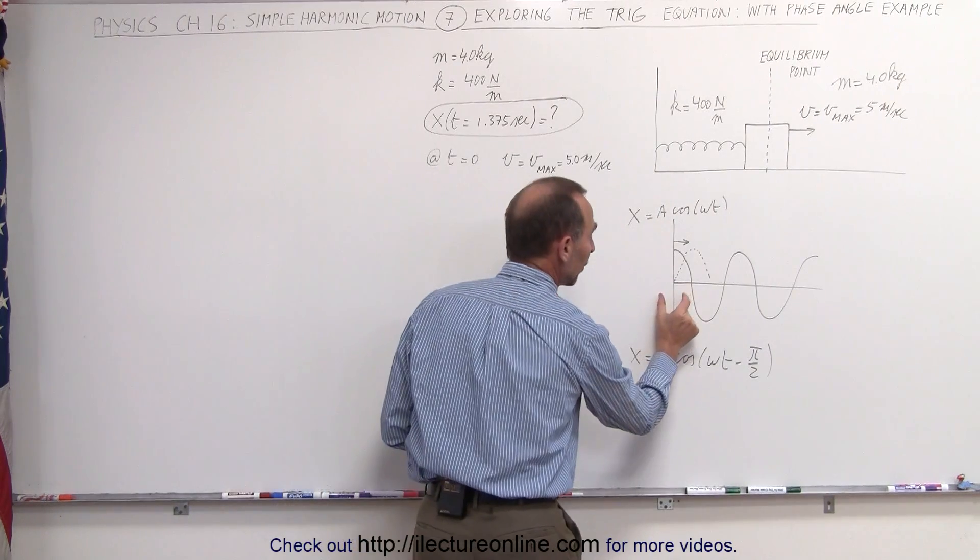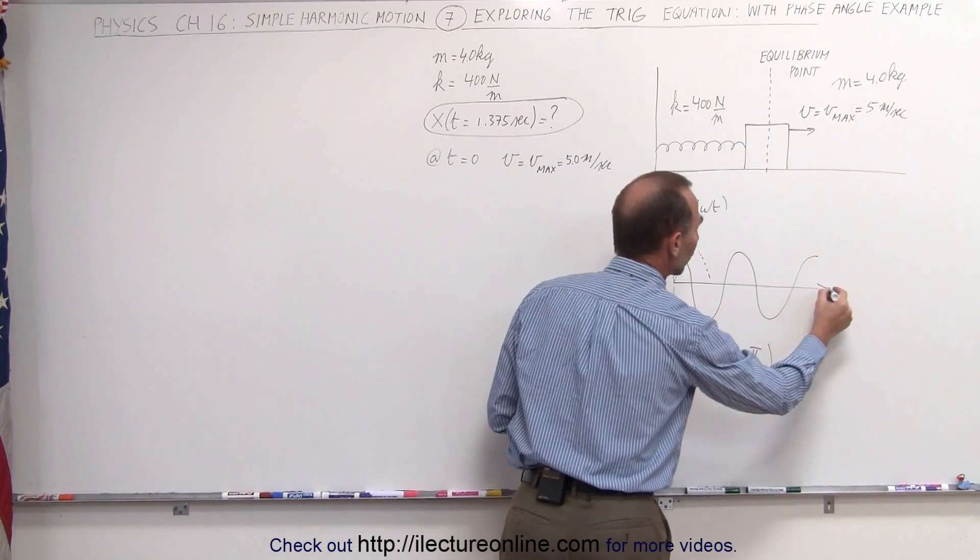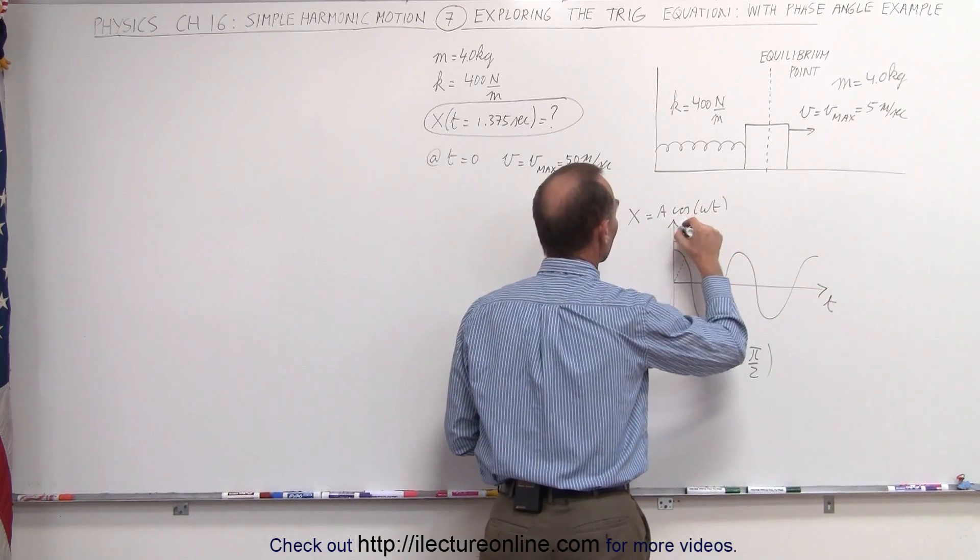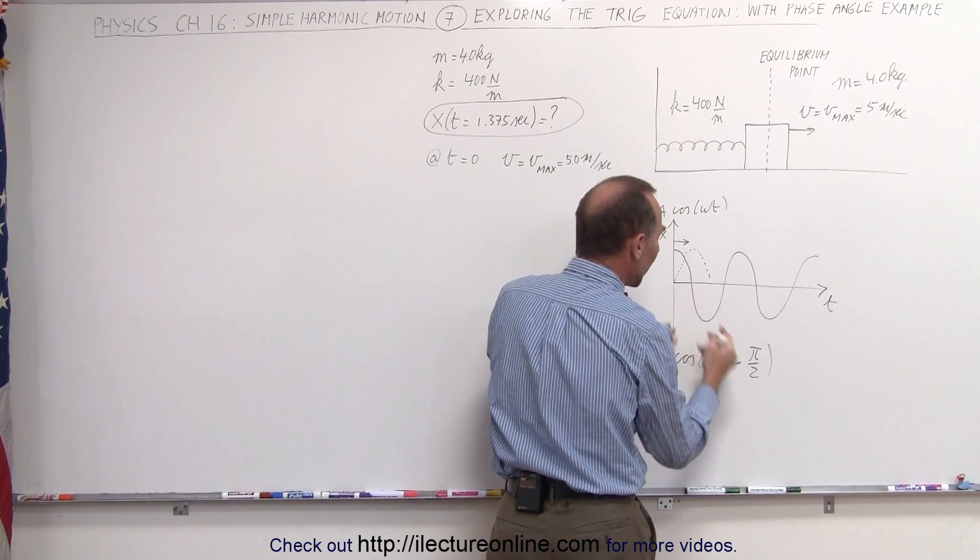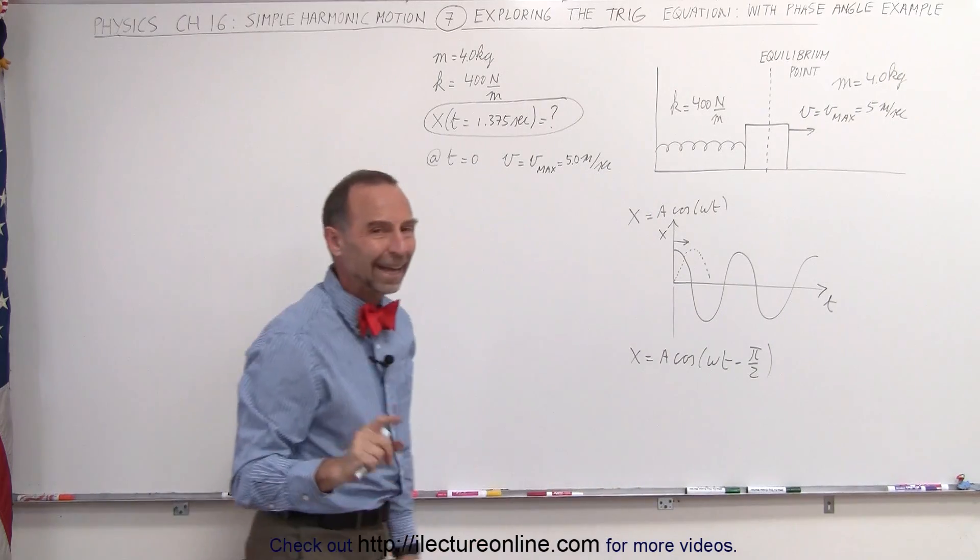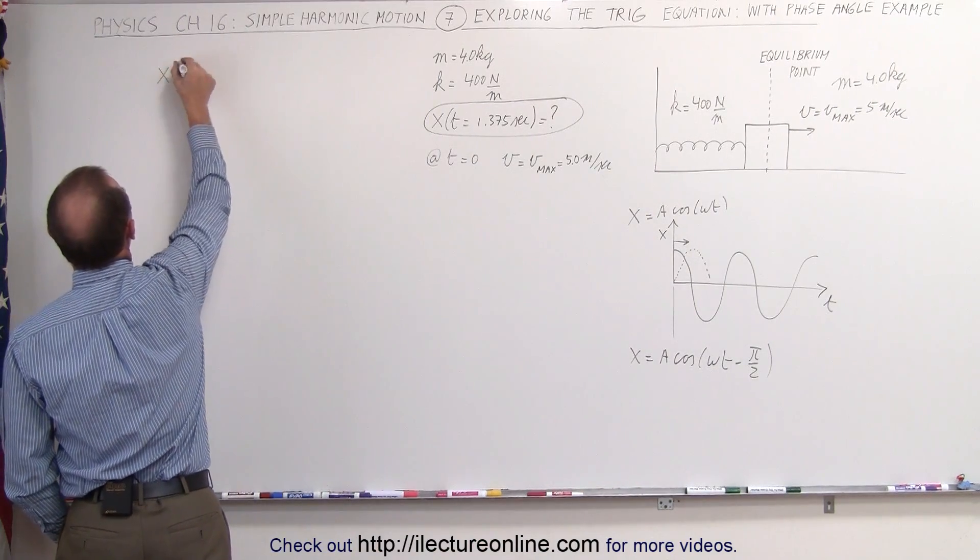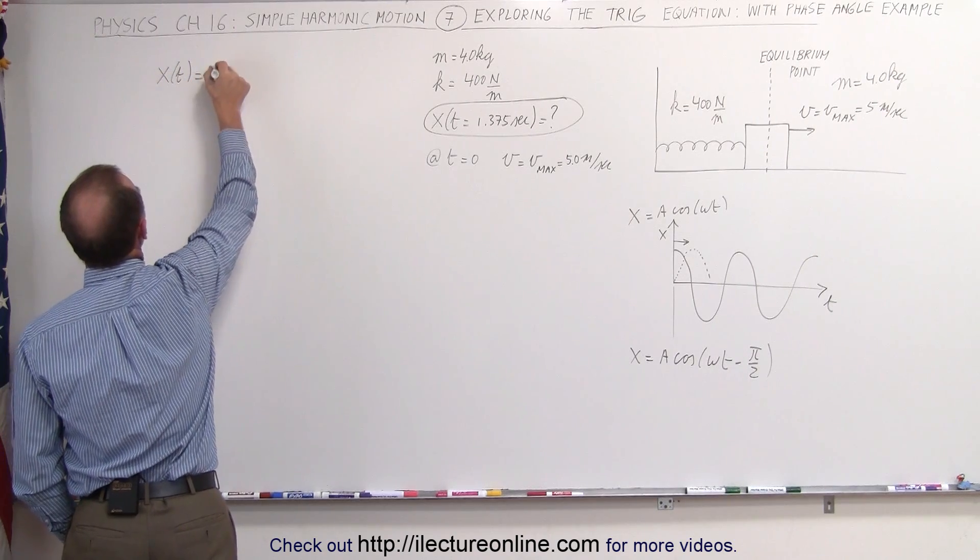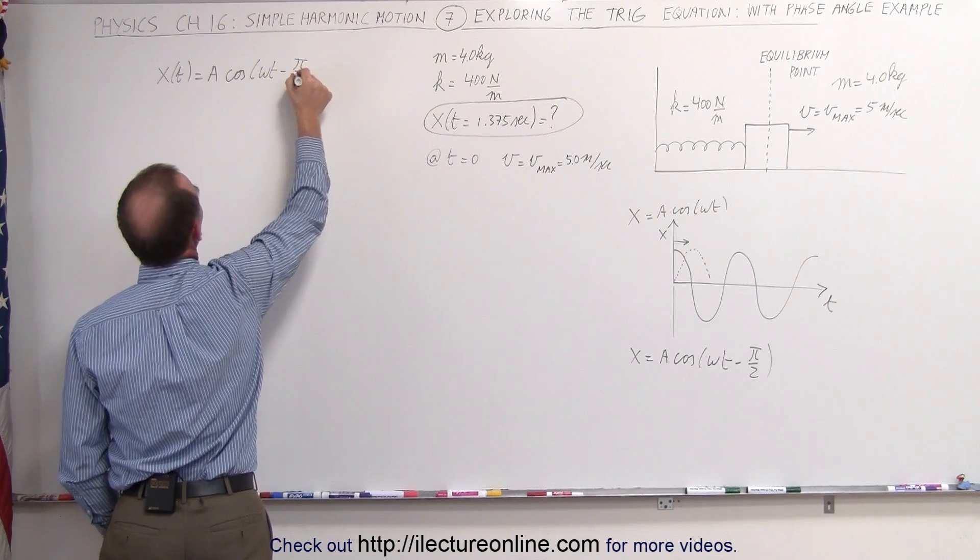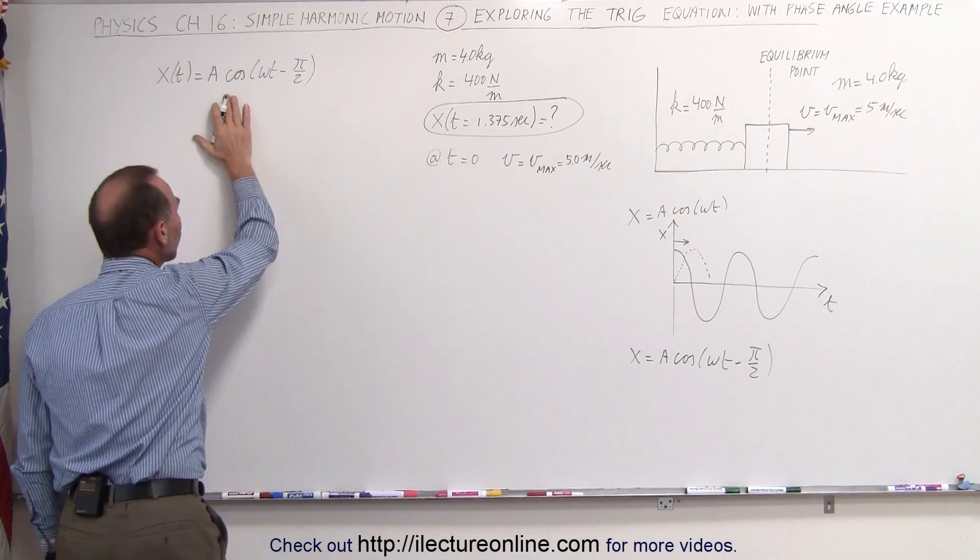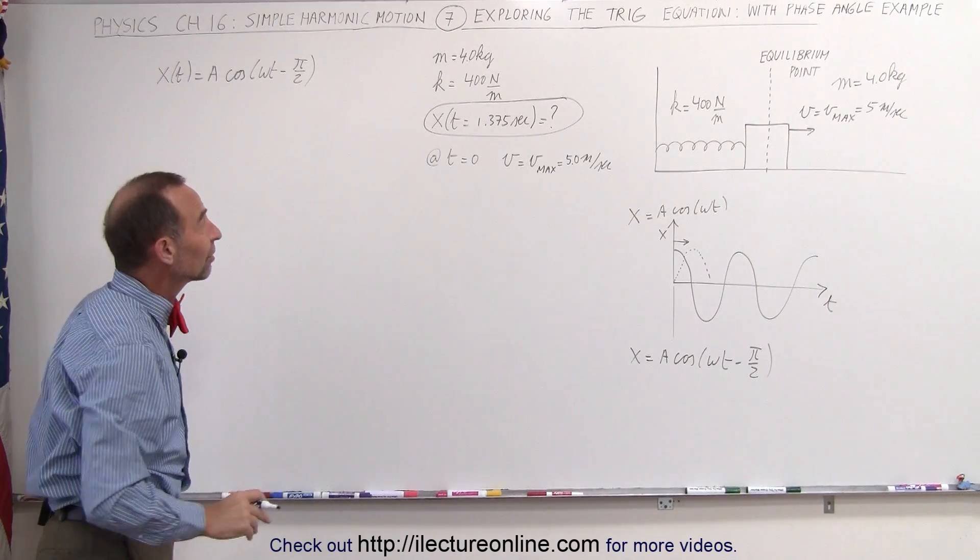We want to shift the equation to the right by a quarter of a cycle, because then at t equals zero, remember that the horizontal axis is time, the vertical axis I call x, which means that the equation will have been shifted to the right by one quarter of a cycle, which is pi over two, and that's the right equation to use in this case. So we can define x as a function of time equals the amplitude times the cosine of omega t minus pi over two. And now this equation will allow us to find the proper position when time equals 1.375 seconds.